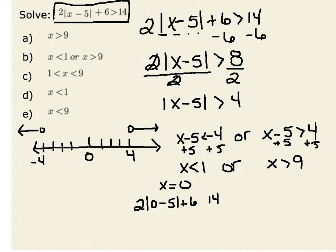The absolute value of negative 5 is a positive 5. So I have 2 times 5 plus 6. Well, 2 times 5 is 10, plus 6 more is 16. Therefore, I know that 16 is indeed greater than 14.